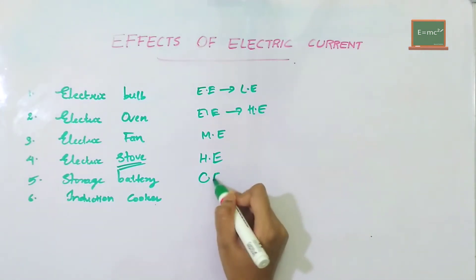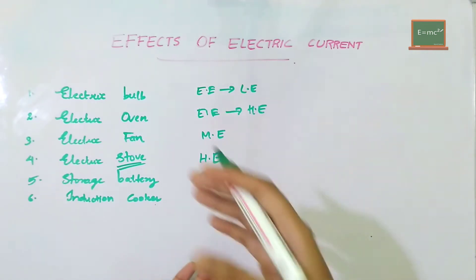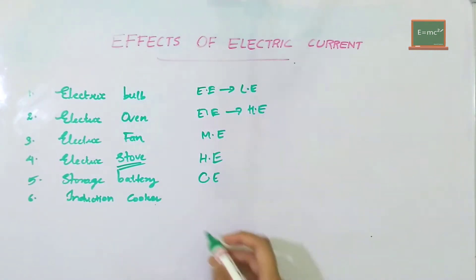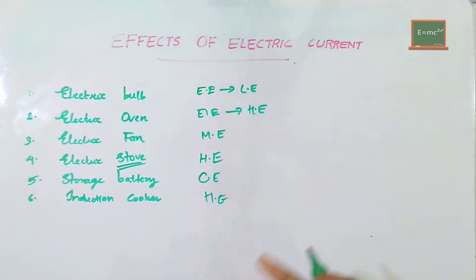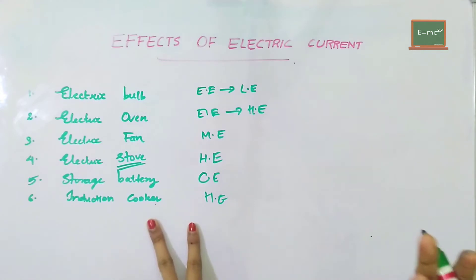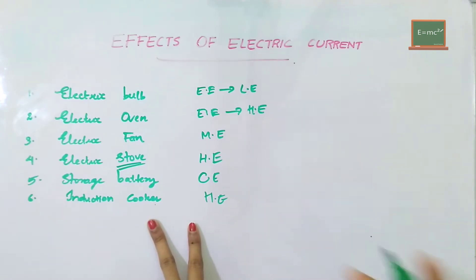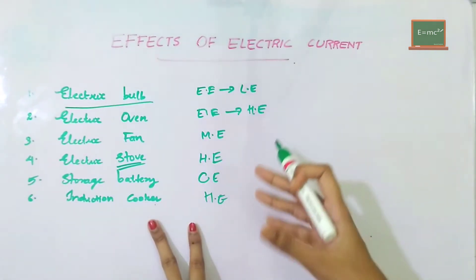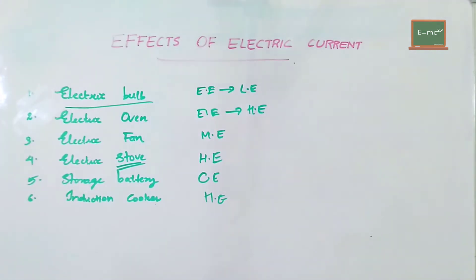Electrical energy is converted into chemical energy. The induction cooker is called stowing, and electrical energy is converted into heat energy. So, for the electrical bulb, electrical energy is converted into light energy. And in the induction cooker, electrical energy is converted into heat energy.